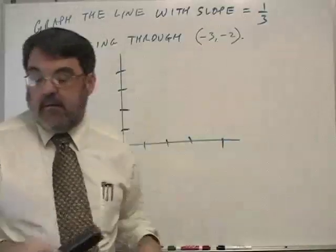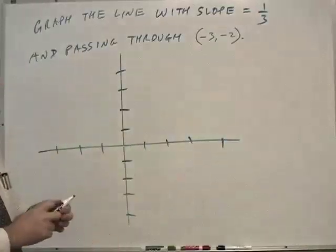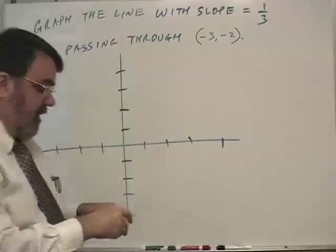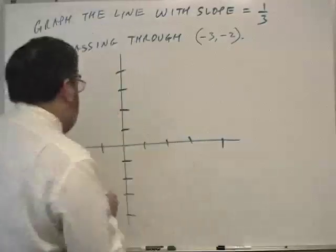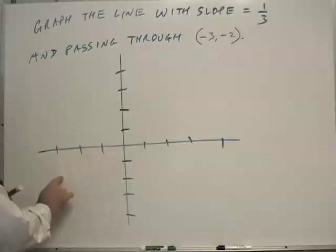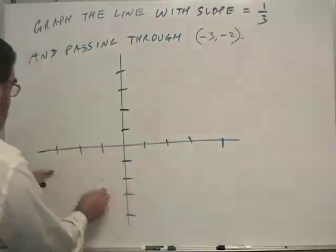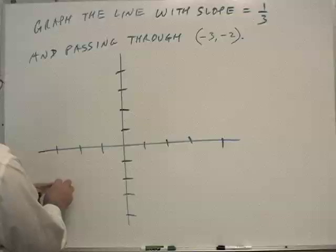And it's a nice big graph. The point through which the line passes is (-3, -2). So I'm going to count negative 3 here, down 2. So this point is approximately here.